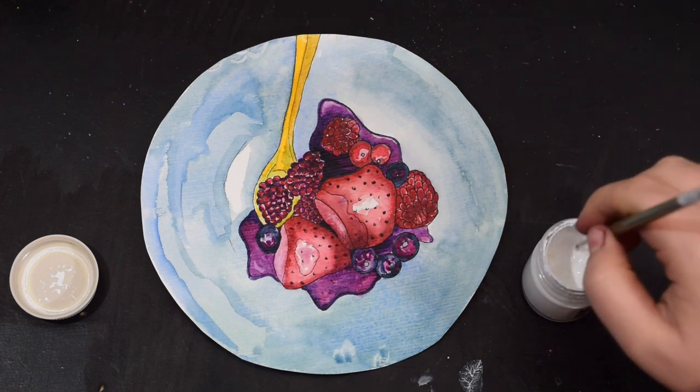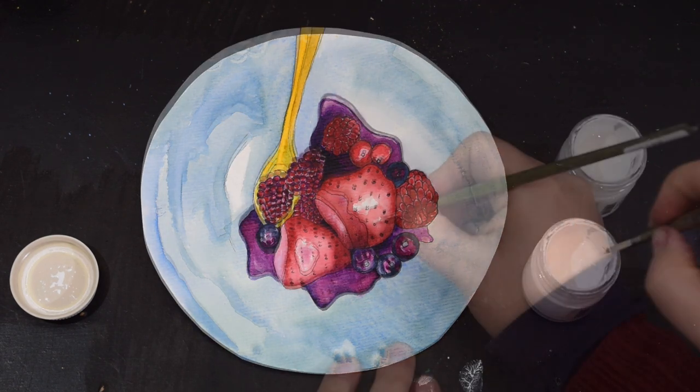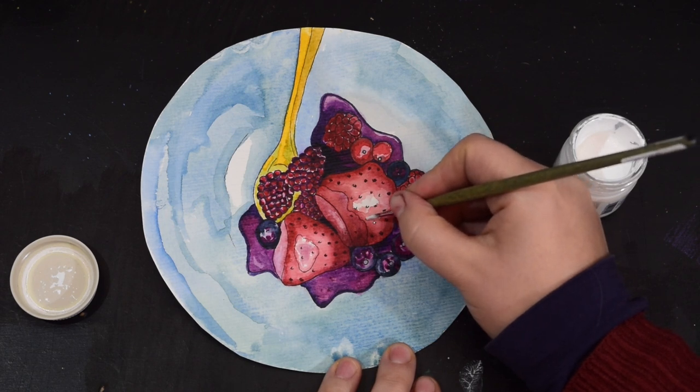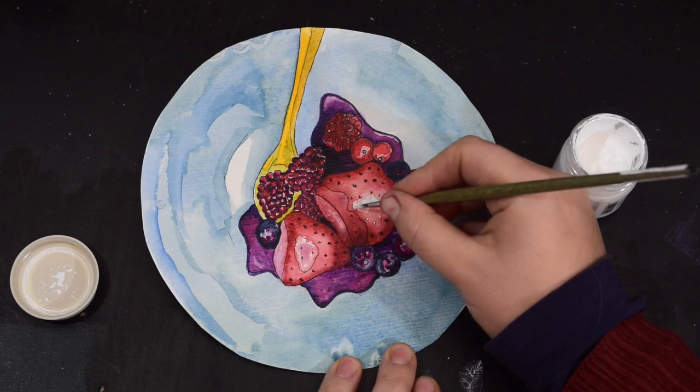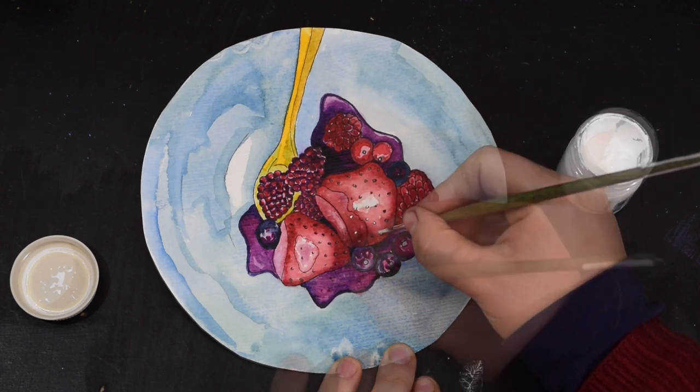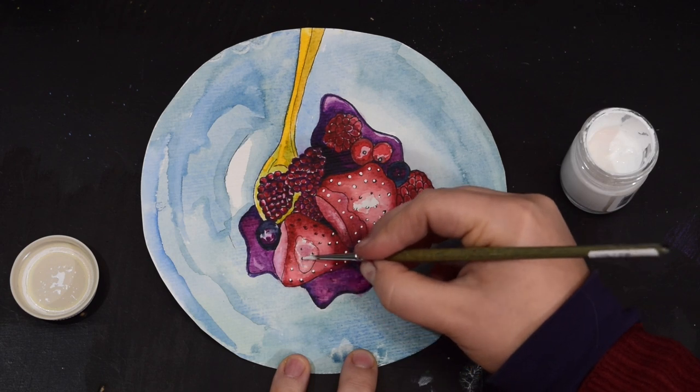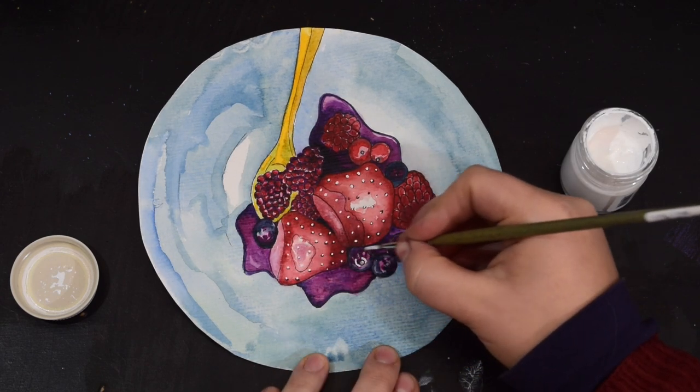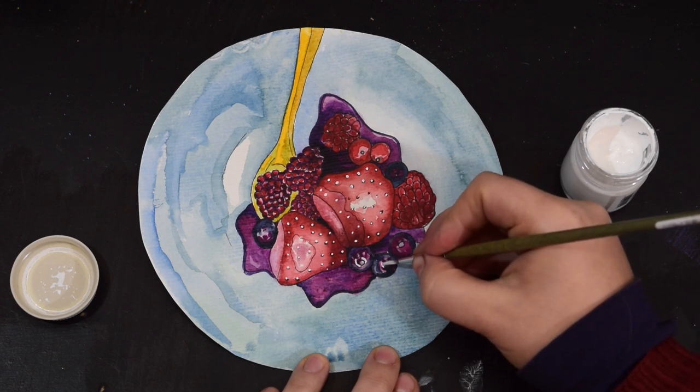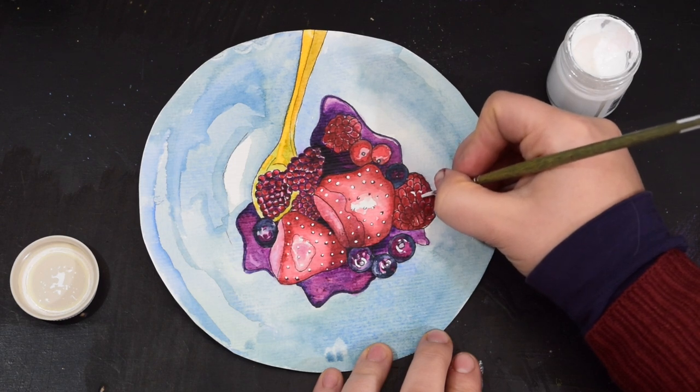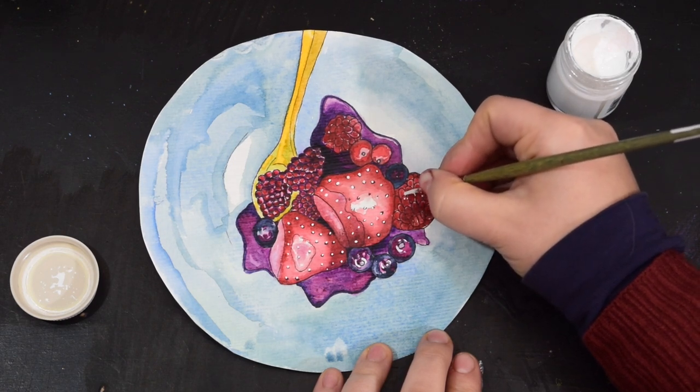I'm going in with my blue-proof white. This just finishes it off, adding the seeds to the strawberries and then adding a bit of highlight to the top of the blueberries and the red currants. I literally just went in the kitchen to have a look what they're called.